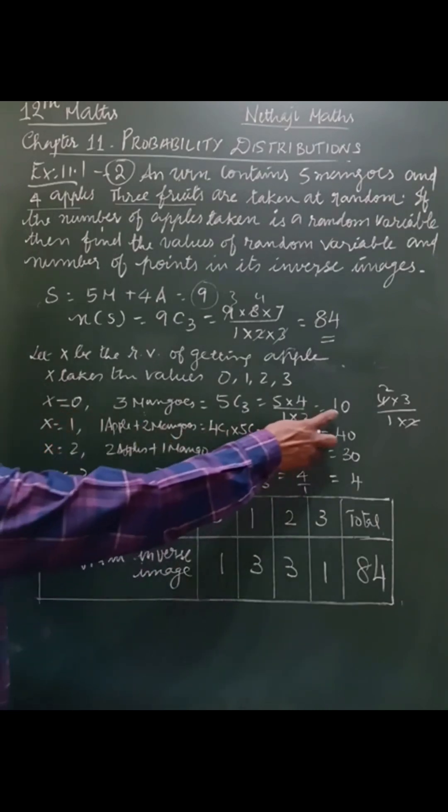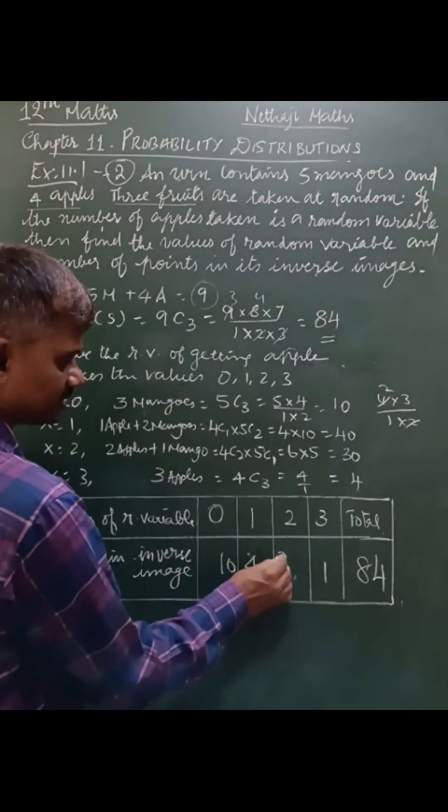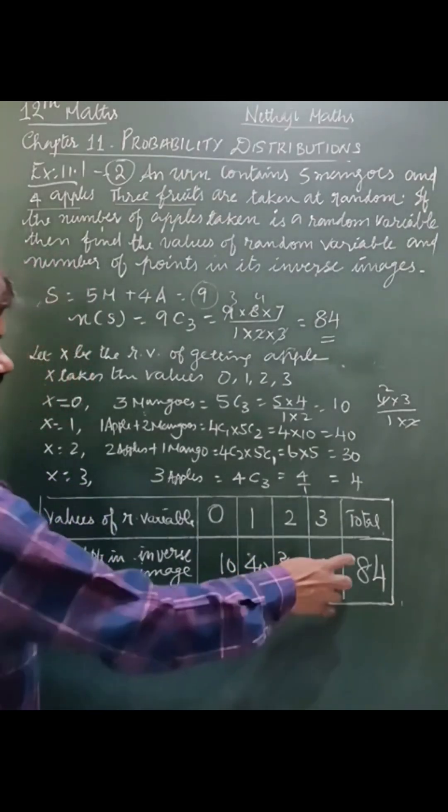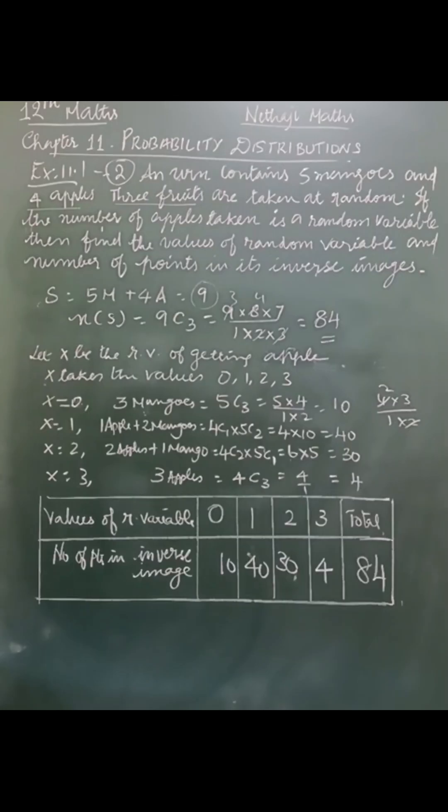For x equals 0, the points is 10; x equals 1 is 40; x equals 2 is 30; and x equals 3 is 4. If you add all these 4 values, you will get 84. That's all. Thank you.